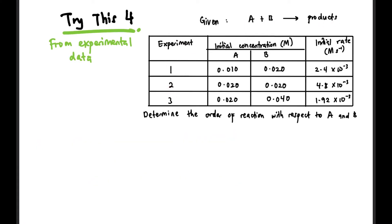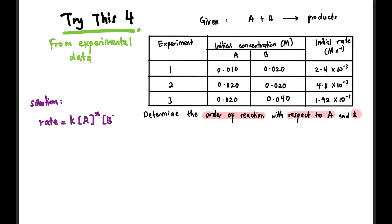Next, try this. Given this data here, A plus B produces products. Basically, this experiment was done 3 times — they varied the initial concentrations of A and B, the reactants, and we observe the effect on the initial rate. This is also called the initial rate method. So the solution is: first, we write the rate expression, or rate law — rate equals K times A to the power of X times B to the power of Y. We don't know the order yet, so we will find X and Y now — that's the order of reaction.